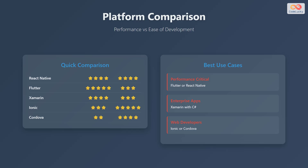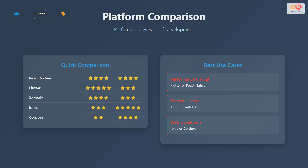Let's make a quick comparison between all the platforms we've discussed. In terms of performance and ease of development, React Native and Flutter are good choices. For enterprise apps, Xamarin with C# is well-suited. If you are a web developer, Ionic or Cordova are the recommended platforms. Keep in mind that the best choice depends on the specific requirements of your project and your team's expertise.